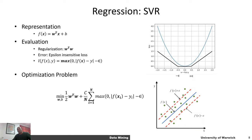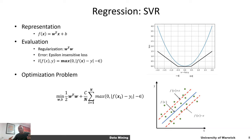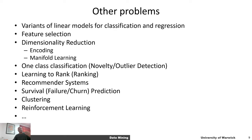To really understand this, ask yourselves these questions: can we use hinge loss for regression? Can we use variance reduction for classification? Can we use a regression loss function for classification? I welcome you to think on these questions so that you understand why a specific loss function is used for a given problem.